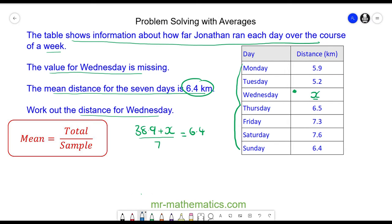To find the value of x, we're going to multiply both sides by 7, because the multiplication and division will cancel. So we're left with 38.9 plus x equals 44.8. Now we take away 38.9 from both sides. These values will cancel, so we're left with x equals 5.9 kilometers.